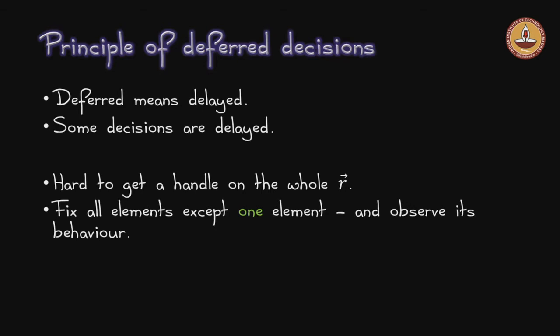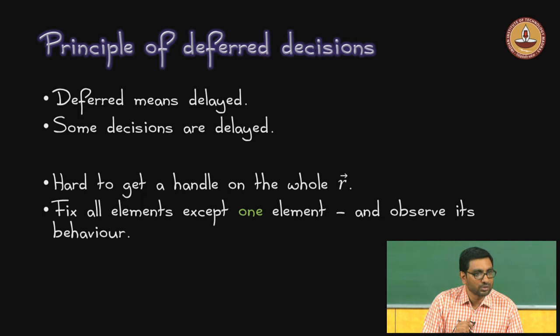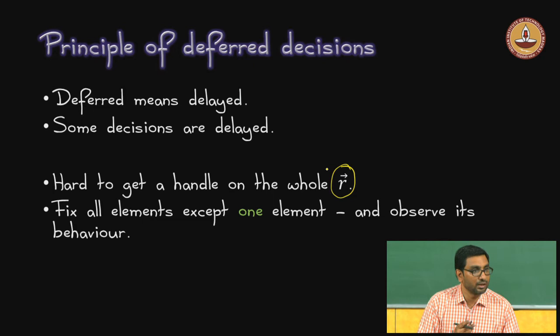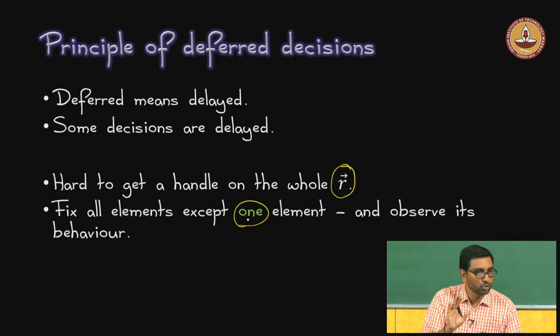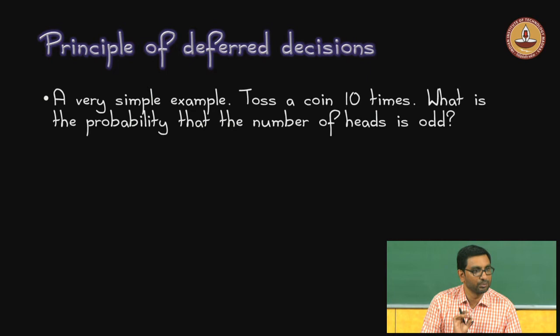Now we want to apply a principle called the principle of deferred decisions - just a technique where deferred means delayed. Some decisions are going to be delayed and others are assumed to have happened. We apply this principle because we have to contend with r, which is an n-bit vector. What we are going to do is fix all elements except one; this one element we are going to defer the decision on. Then we will argue based on that deferred element that the probability of being incorrect is at most half.